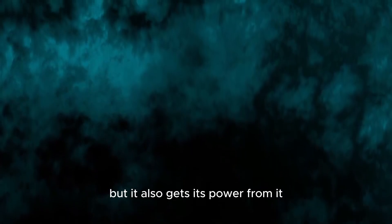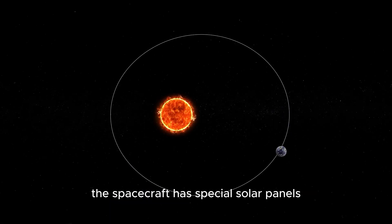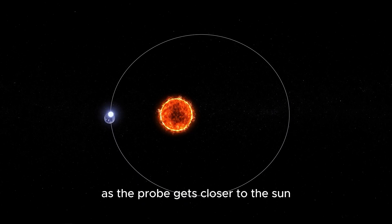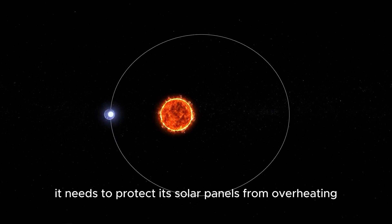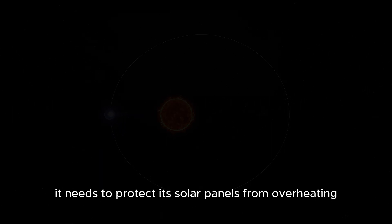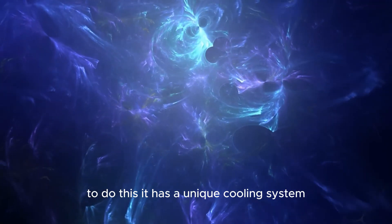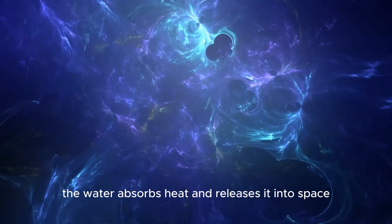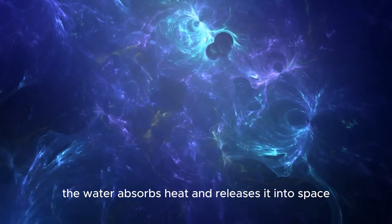Not only is the Parker Solar Probe studying the sun, but it also gets its power from it. The spacecraft has special solar panels called photovoltaic arrays that convert sunlight into energy. As the probe gets closer to the sun, it needs to protect its solar panels from overheating. To do this, it has a unique cooling system that circulates a little water through the panels. The water absorbs heat and releases it into space, keeping everything cool.